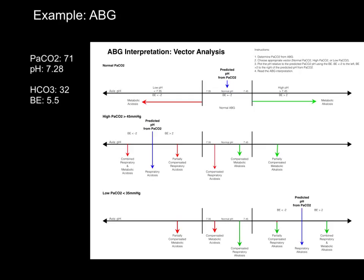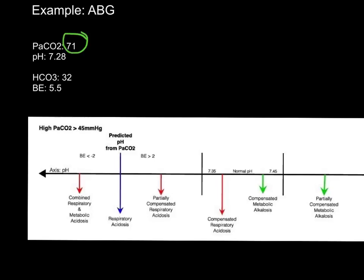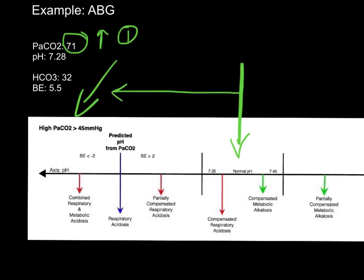In our first example, we've got an arterial blood gas where the CO2 is quite high. That leads us right away to our high CO2 axis and vectors. So we've got our high CO2, and our first step is to choose our high CO2 vectors. We're going to start drawing our vectors at the normal pH. I always start with my respiratory vector — with a relatively high CO2, I should have a relatively low pH, and that's what these vectors tell us. So I'm going to plot my respiratory vector to the left side of the graph.